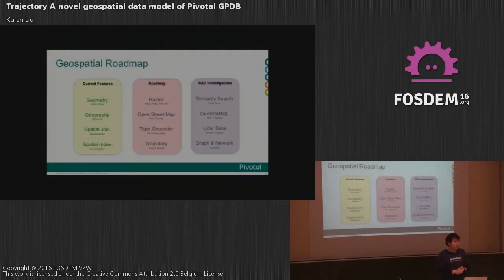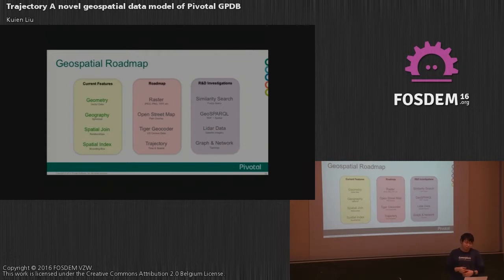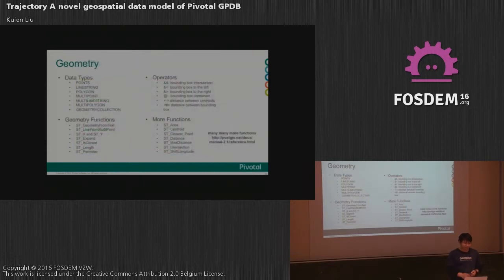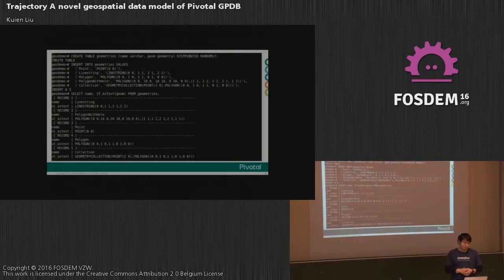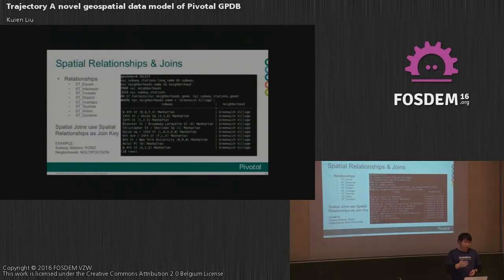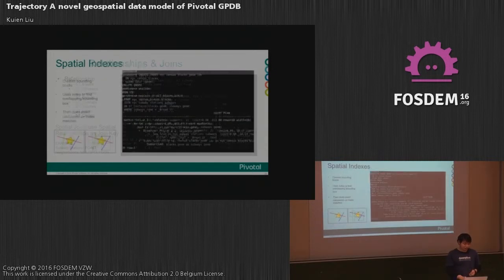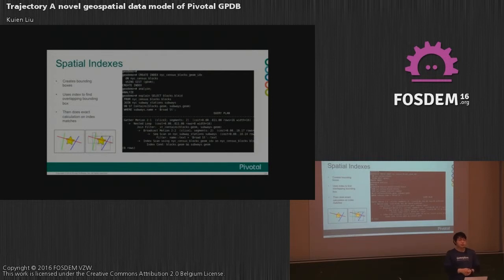Now let's move to geospatial. We have plans to develop geospatial features in this open-source database. We have integrated geometry and geography into GIMPUMP, and we are now working on raster and trajectory. For geometry, many of you are familiar with this, so I'll skip it. We can perform queries using SQL with points, polygons, and similar constructs. We can also establish relations between data. For indexing, we use GIST to support two-dimensional data types, developed by Oleg and others.